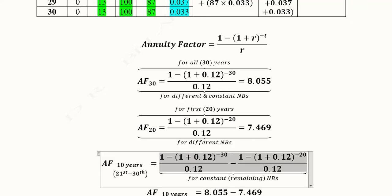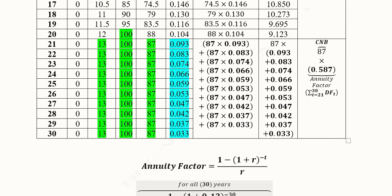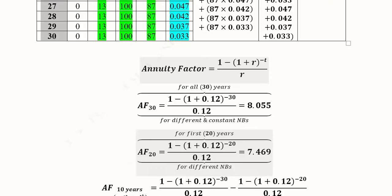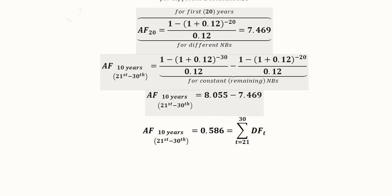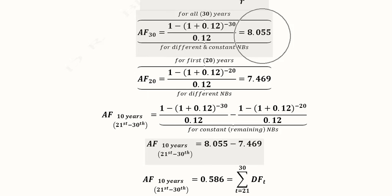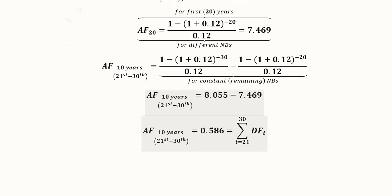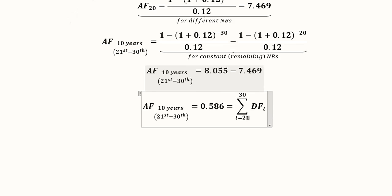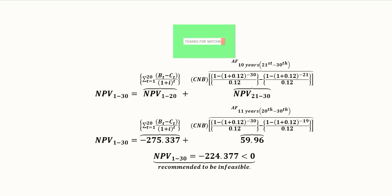From the total annuity factor we subtract the 20-year annuity factor. The formula is: annuity factor for 30 years minus annuity factor for 20 years, which gives the annuity factor for 10 years — where the 10 years are from the 21st till the 30th year. These are the net benefits which are common and remaining. Finally, by putting the values found in these steps, the annuity factor is 0.586 for the 21st through 30th year.